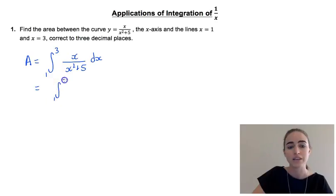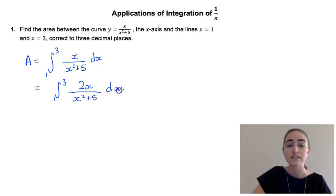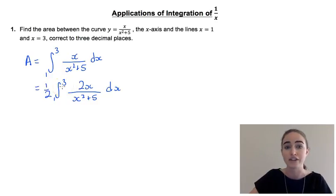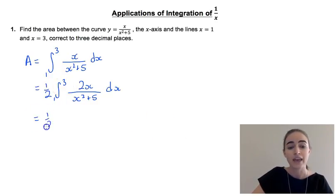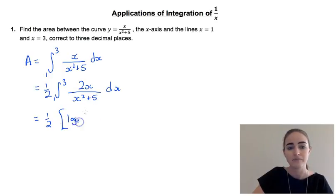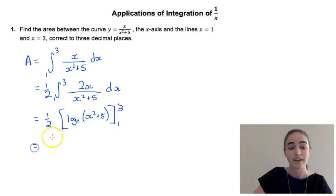If we wanted it to be the derivative it would have to be 2x instead of just x. So we can manipulate it so that it is, but then we have to compensate for that by putting a half out the front. Now that we've got that half out the front we can integrate and we'd have log to the base e of x squared plus 5, and we want to substitute in our bounds of 3 and 1.